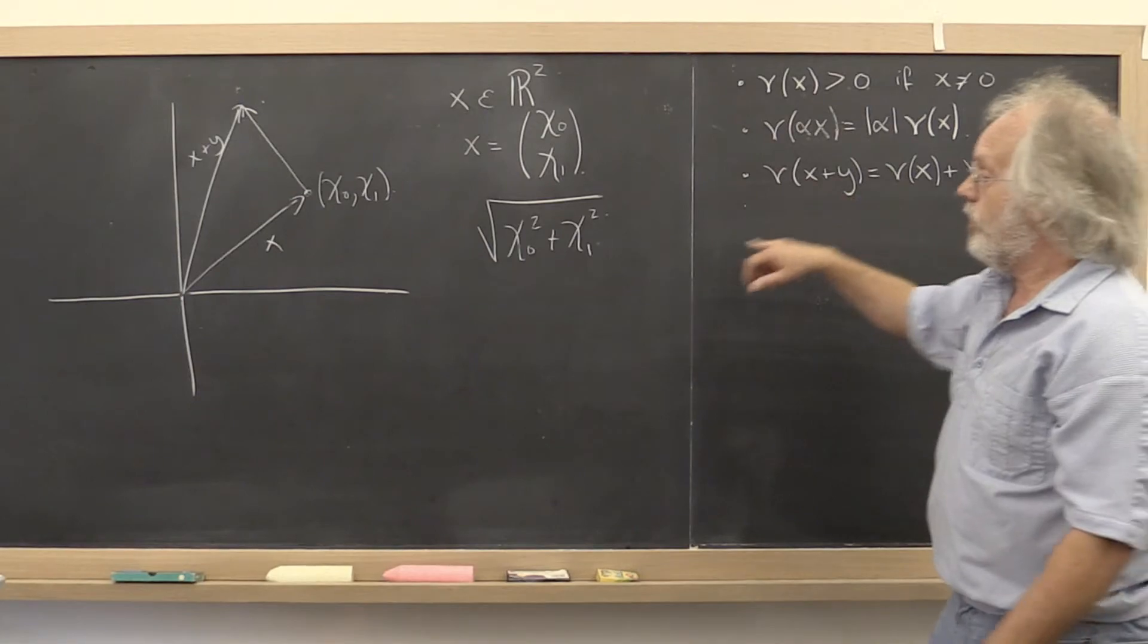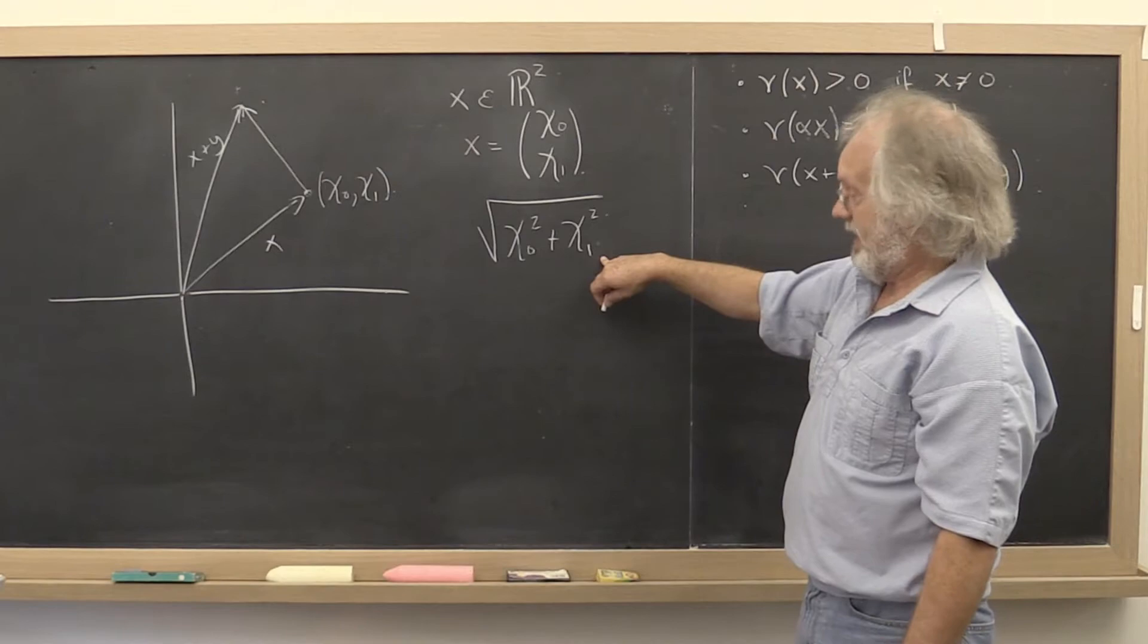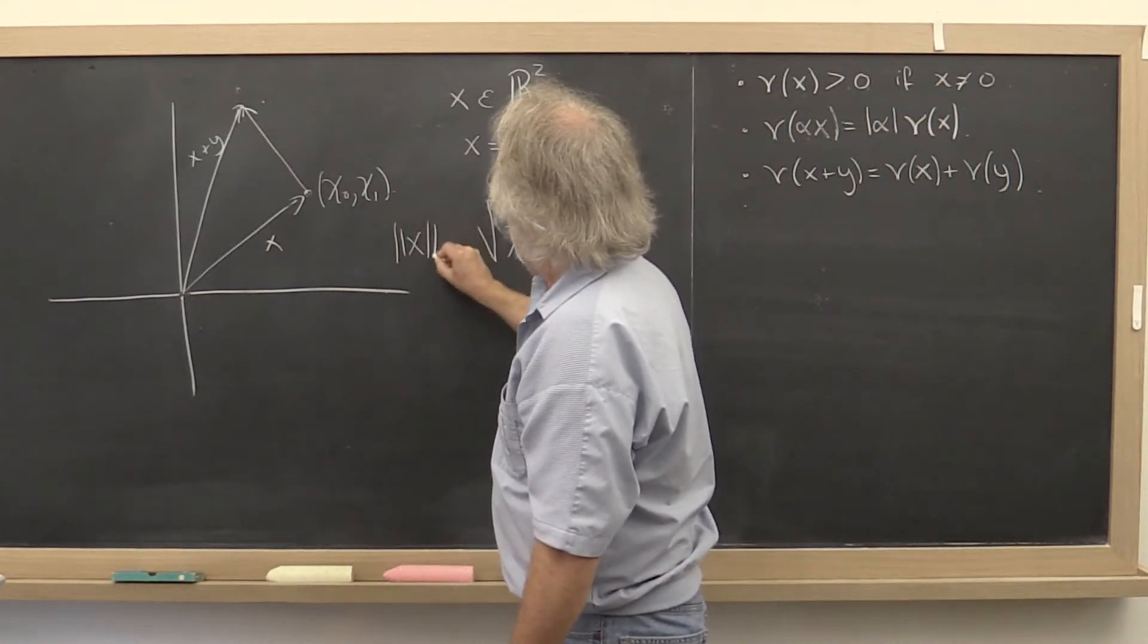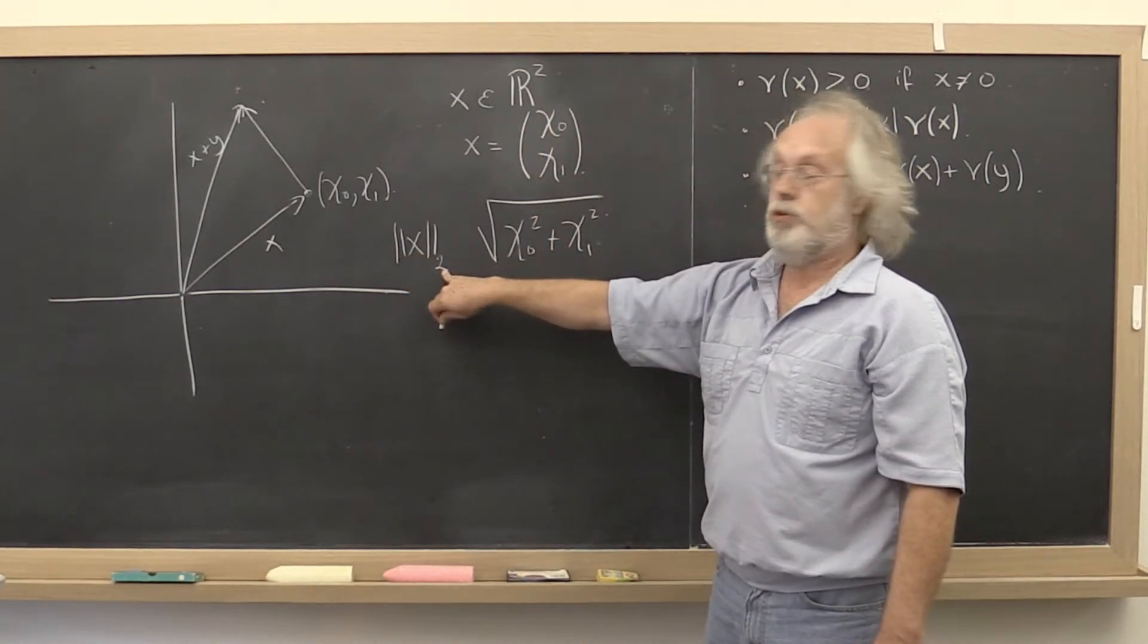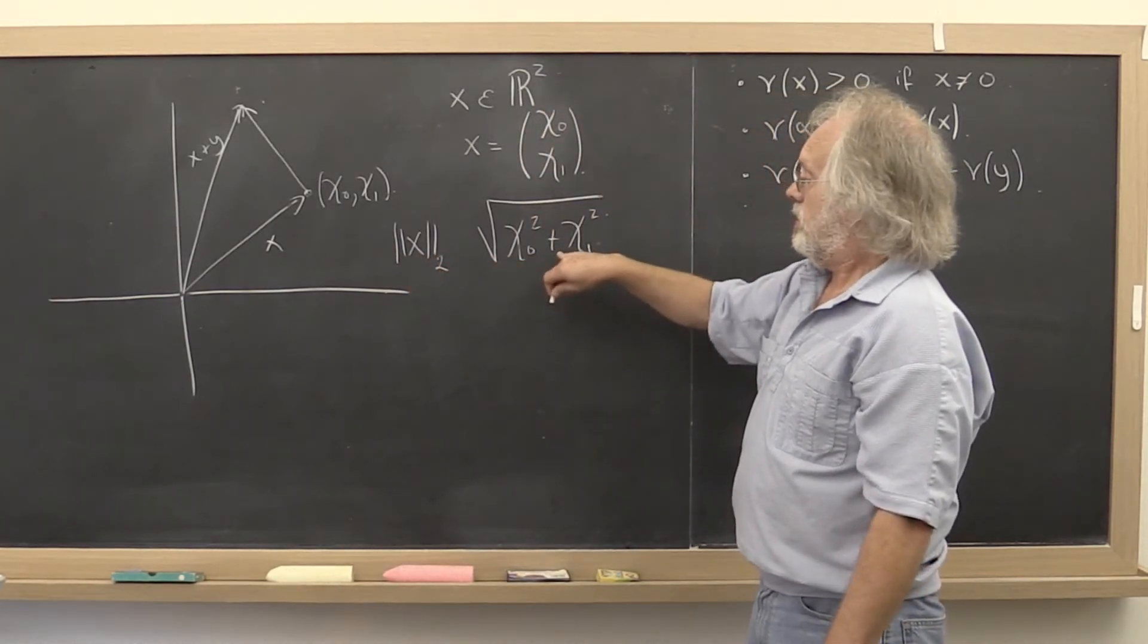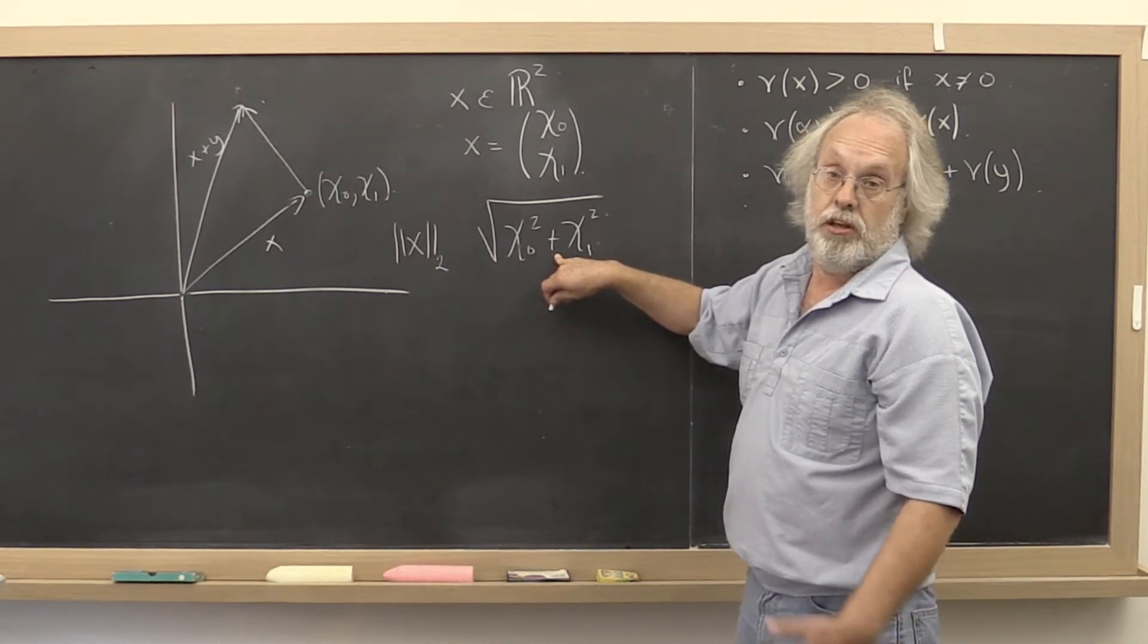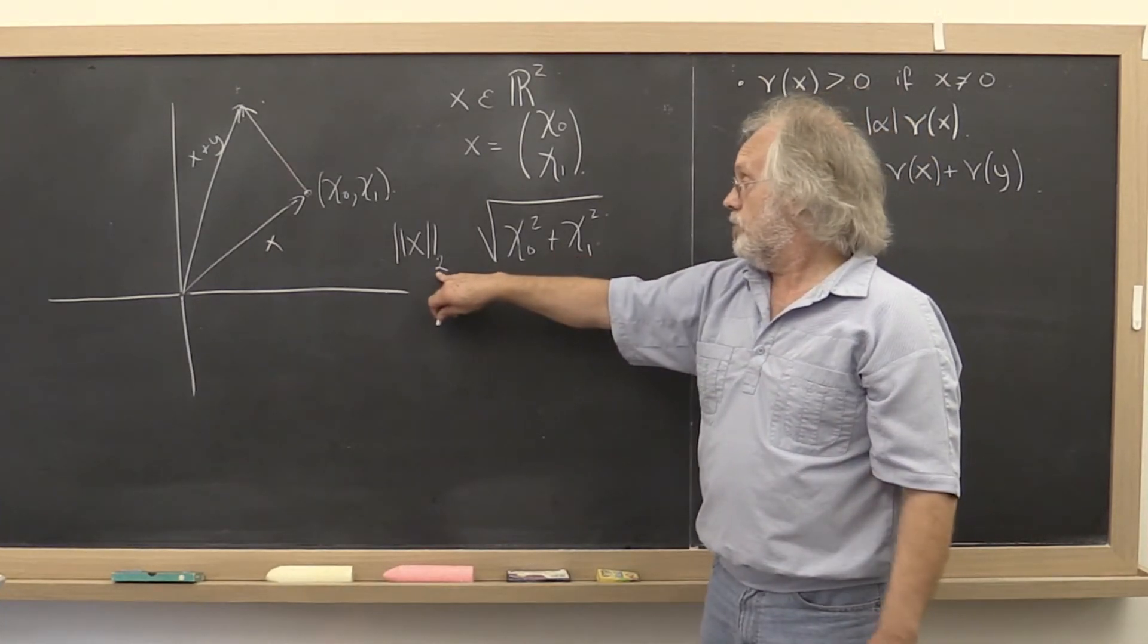Now this particular measure of length is denoted by these double lines with a 2 at the bottom because this is going to be a special case of the p-norms where p is equal to 2.